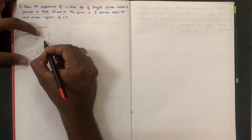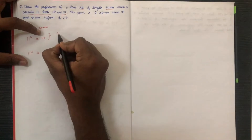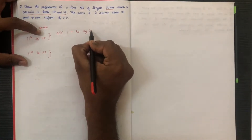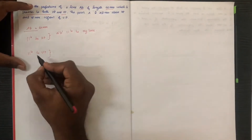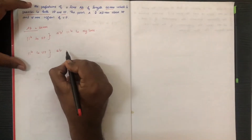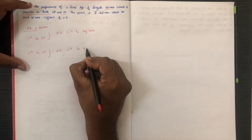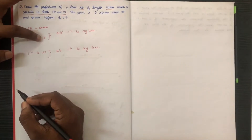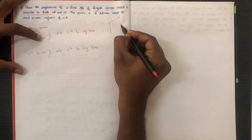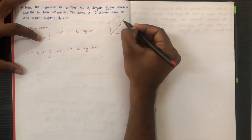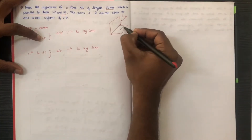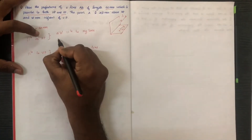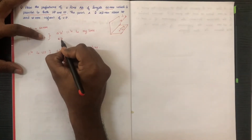If you look at the elevation — if it is parallel to HP, then a-b is parallel to the XY line. We have to note: the line is parallel to VP when the plan is parallel to the XY line. If the line is parallel to HP, then the projection of the line is parallel to HP.